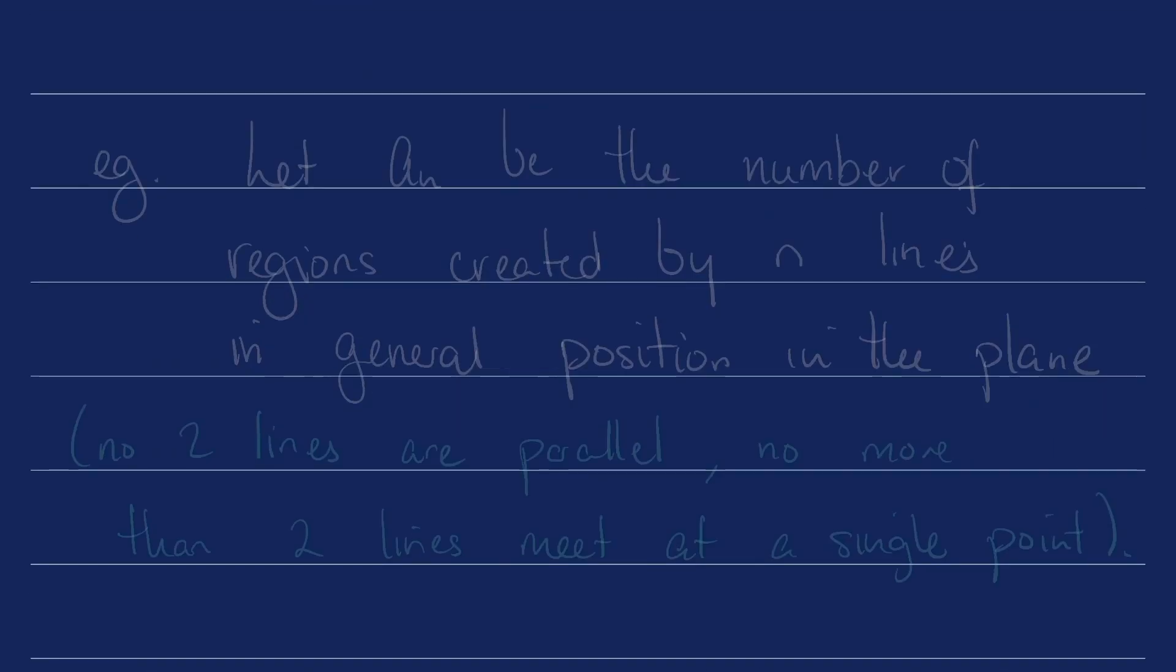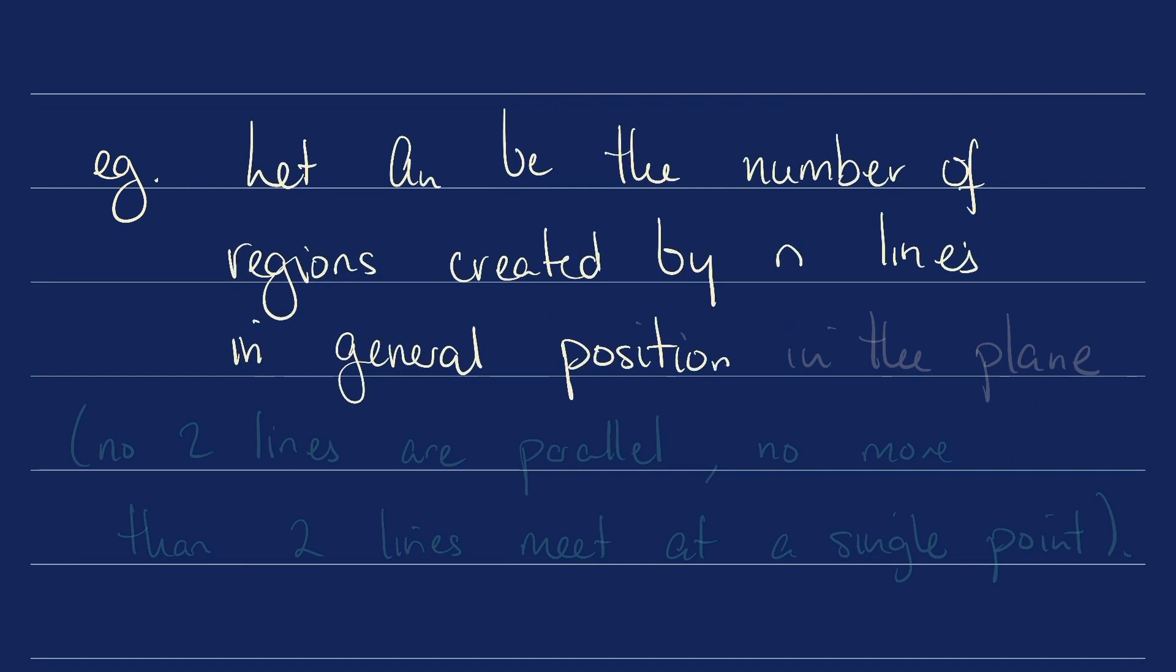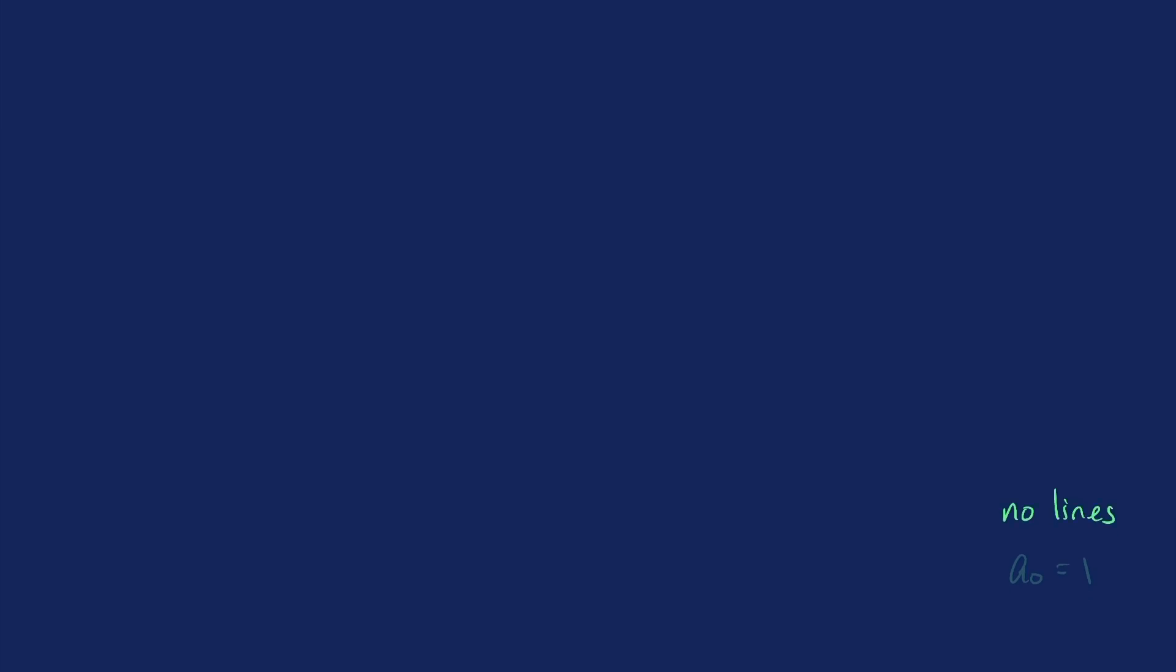Let's do a different example. Let a_n be the number of regions created by n lines in general position in the plane. What this means is no two lines are parallel and no more than two lines meet at a single point. When there are no lines in the plane, there is only one region. When there is one line in the plane, there are two regions.